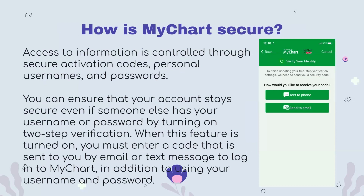Access to information is controlled through secure activation codes, personal usernames, and passwords. You can ensure that your account stays secure even if someone else has your username or password by turning on two-step verification. When this feature is turned on, you must enter a code that is sent to you by email or text message to log into MyChart.